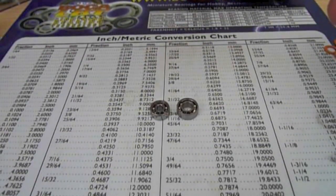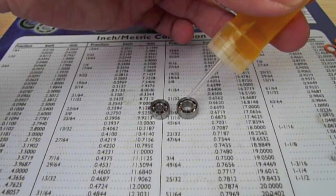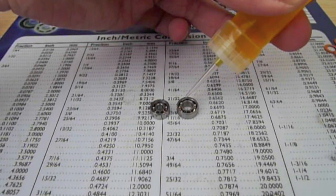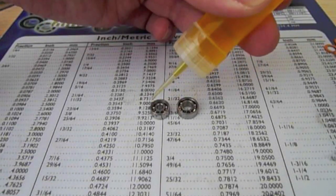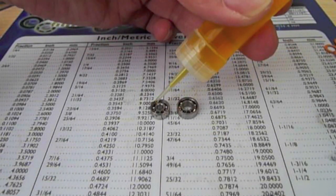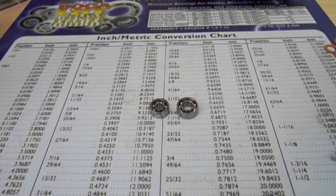The next thing we're going to do is put some oil in the bearings. Just put a drop in each bearing. And there, that's done.